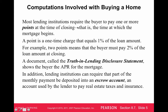Lending institutions may offer the buyer the option to pay one or more points at closing. A point is a one-time charge equal to 1% of the loan amount. For example, two points means the buyer pays 2% of the loan at closing. This is a fee paid to the lending institution that can help lower your interest rate. Closing means when you actually get the loan.